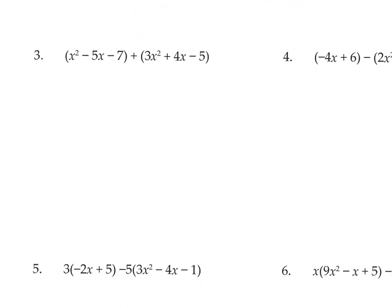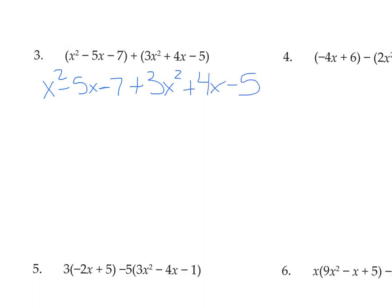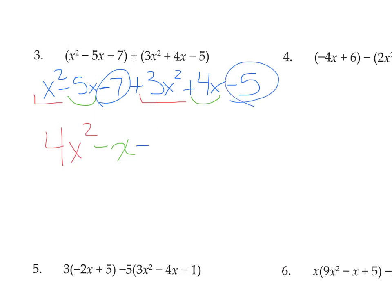Number 3 has parentheses showing us a trinomial plus another trinomial. When you are adding, you just drop the parentheses and combine like terms. So we have x² minus 5x minus 7 plus 3x² plus 4x minus 5. Starting with the squared terms: 1x² plus 3x² makes 4x². Then negative 5x plus 4x makes negative 1x. And the constants: negative 7 minus 5 makes negative 12.